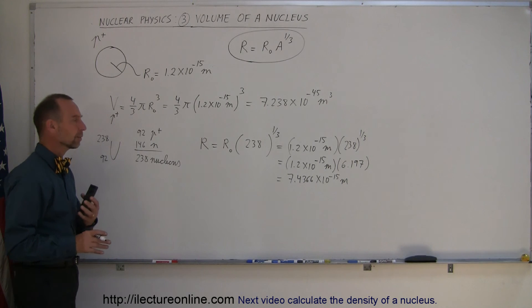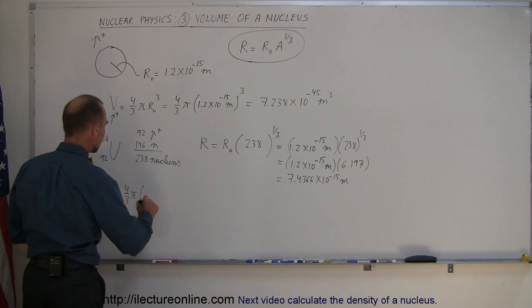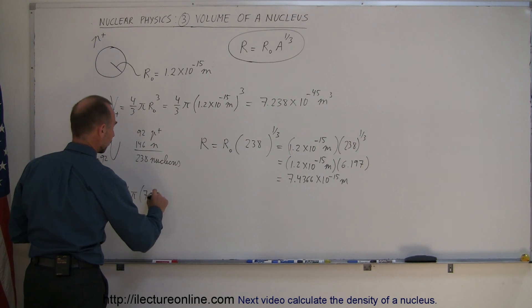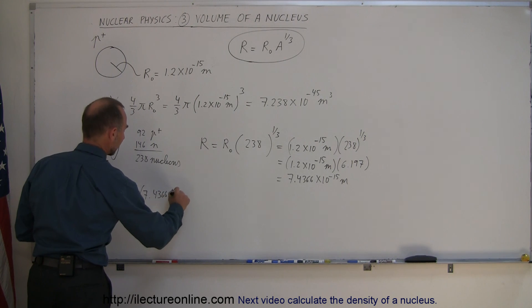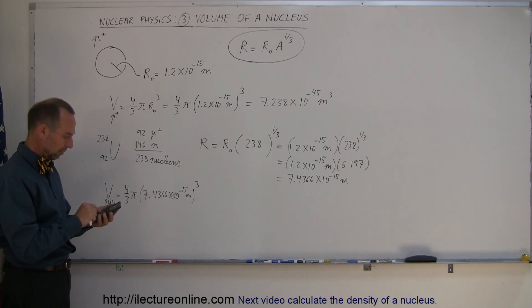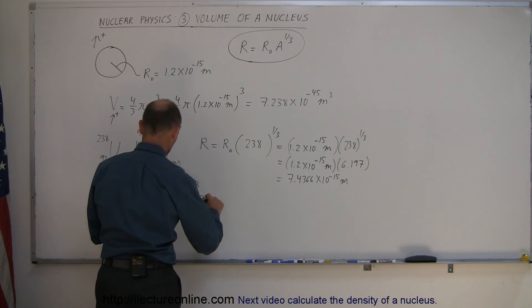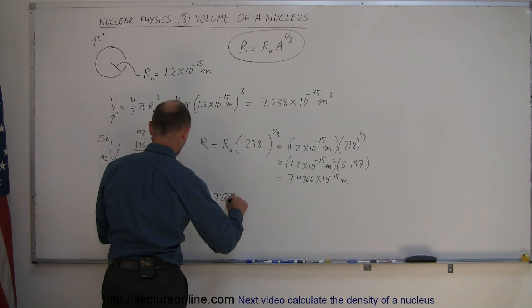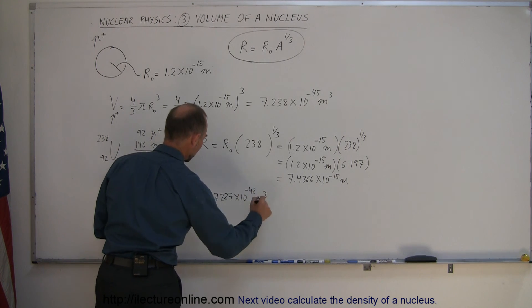So what's the volume of a uranium nucleus? The volume of uranium-238 is equal to 4/3 π times its radius cubed: 7.4366×10⁻¹⁵ meters, cubed. Take that amount, cube it, multiply times 4, divide by 3, times π, and we get 1.7227×10⁻⁴² cubic meters.